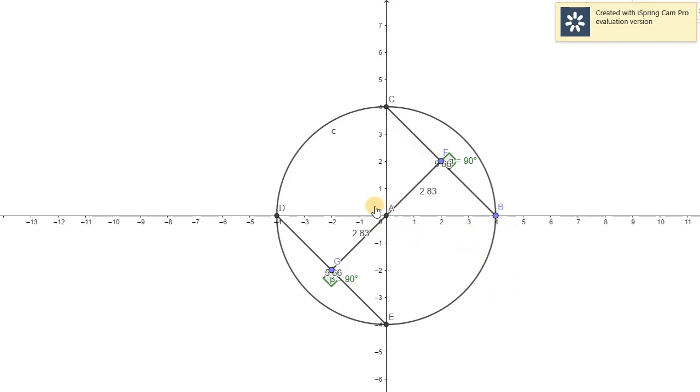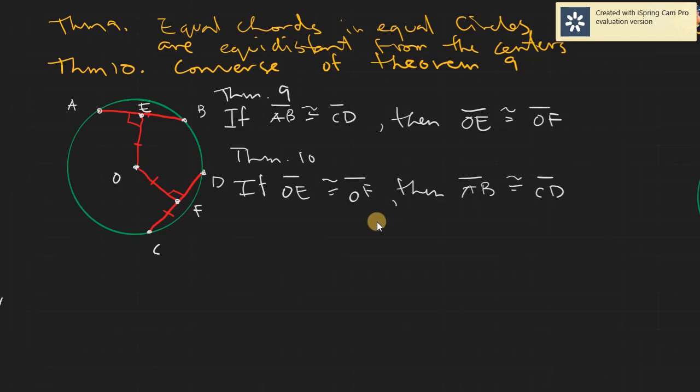Take note, in theorem 9 and 10, let's just go back. If you have chords that are equal, then the perpendicular distances are equal, and at the same time, if the perpendicular distances are equal, then the chords are also equal. So that would be our theorem 9 and 10.